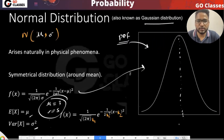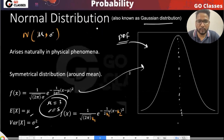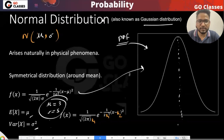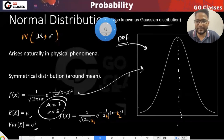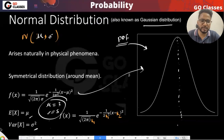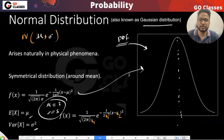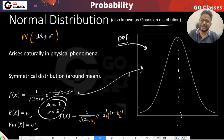So coming to normal distribution — can you recall what the normal distribution is and why we call it normal distribution? My guess is that we call it normal distribution because it is extremely natural in general life.